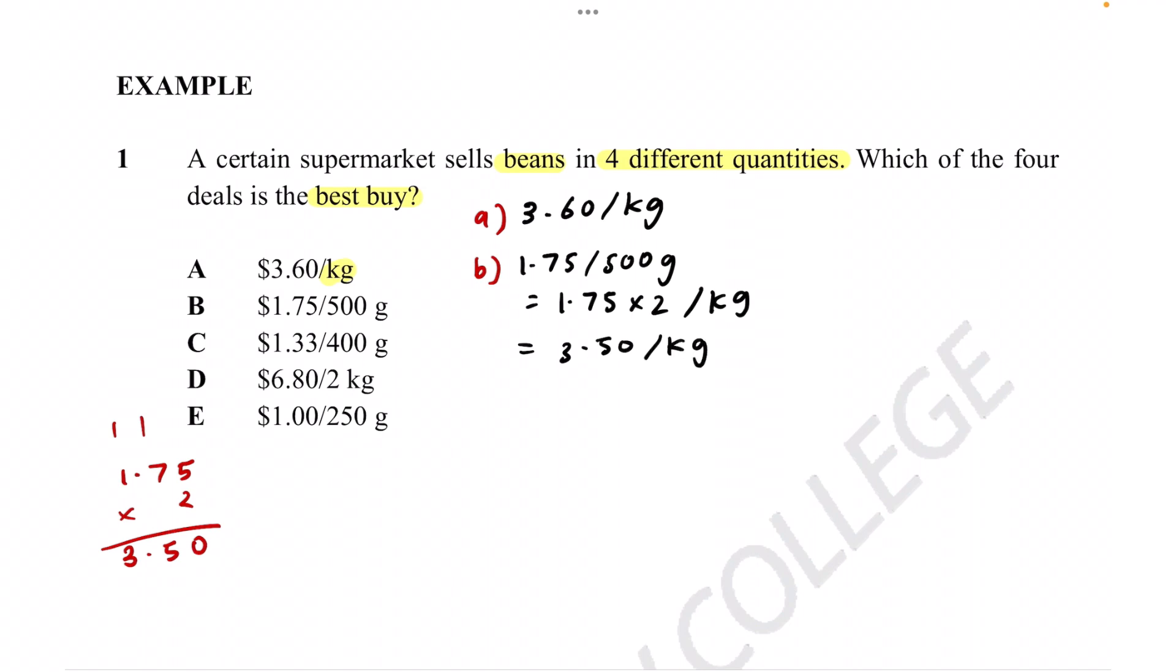Okay, let's do C. C is kind of complicated because it is $1.33 per 400 grams. Let's first convert this into 100 grams. So we divide by 4 on each side. So then we get 1.33 divided by 4 per 100 grams, which is 0.3325 per 100 grams. And then we can times 10 on each side because 100 grams times 10 would be a kilogram. So if it's times 10, we just move the decimal point up. So it becomes $3.325 per kilogram.